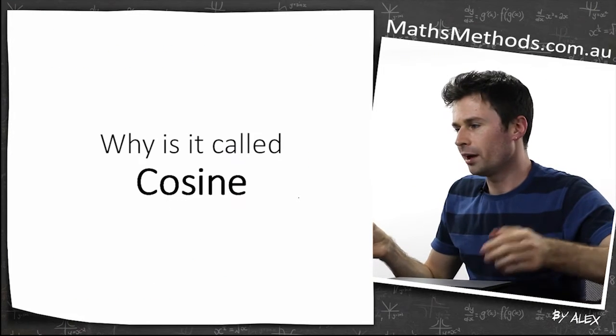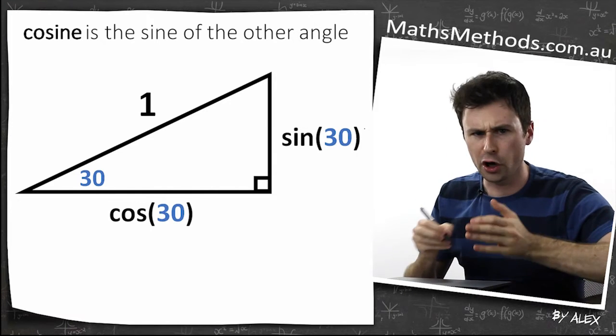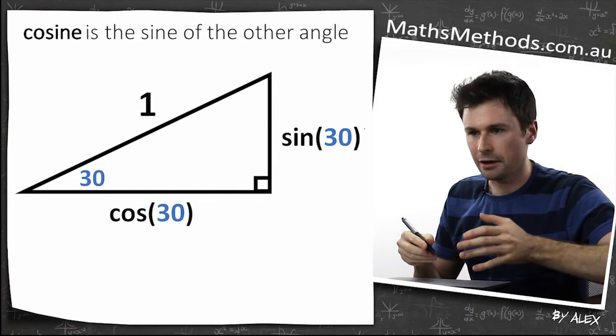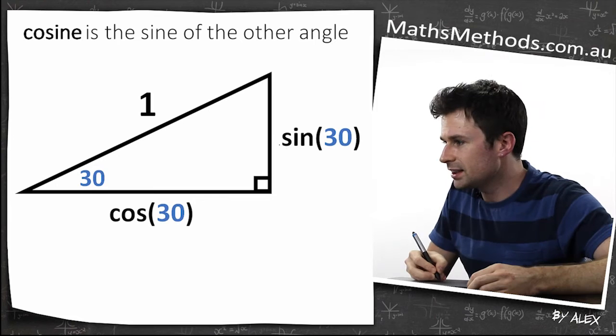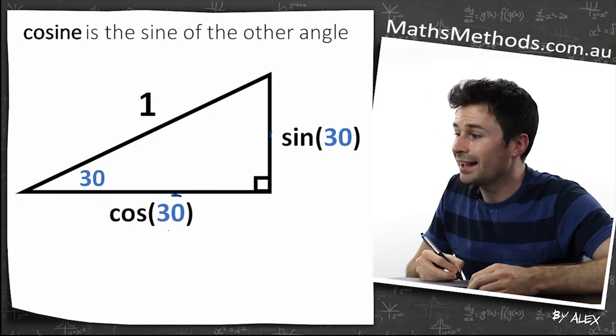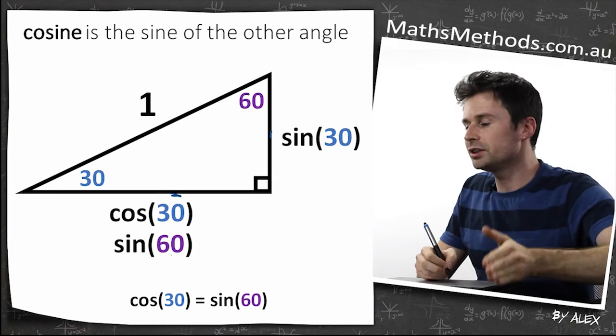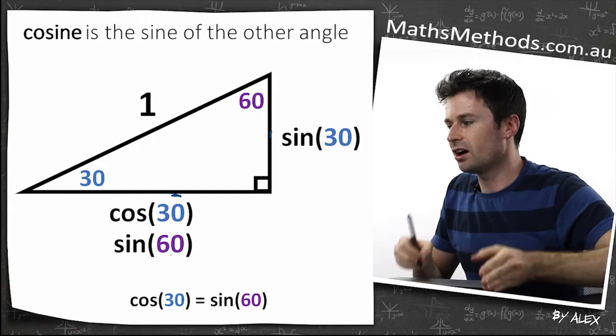Why is it called cosine? Cosine is actually the sine of the other angle. You can think of co as in cooperation, where you have two things working together. This is sine 30, and this is cosine 30, and cosine 30 is just sine 60. So basically, cosine of 30 is the same as sine of 60.